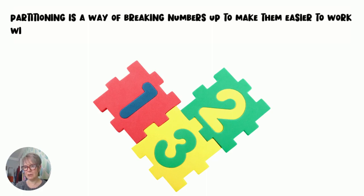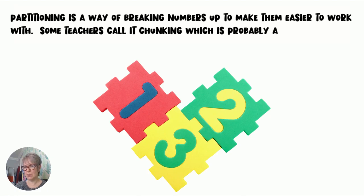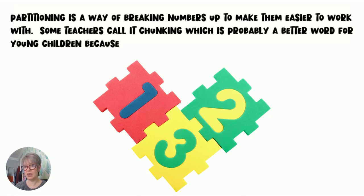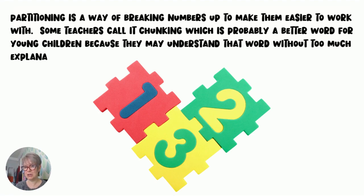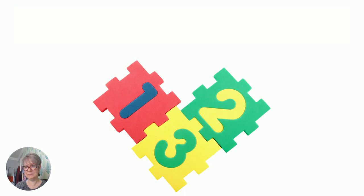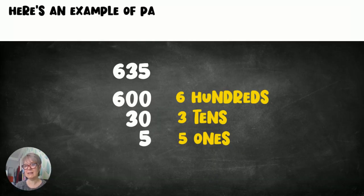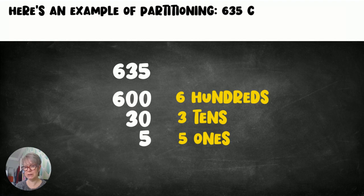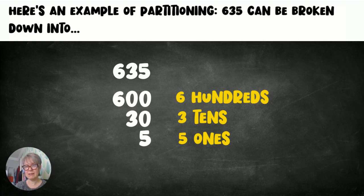So what is partitioning? Partitioning is a way of breaking numbers up to make them easier to work with. Some teachers call it chunking, which is probably a better word for young children because they may understand that word without too much explanation. Here's an example: 635 can be broken down into 600 (six hundreds), 30 (three tens), and 5 (five ones).